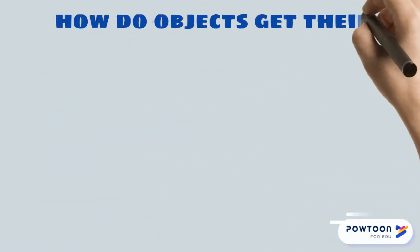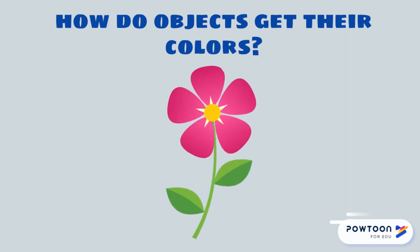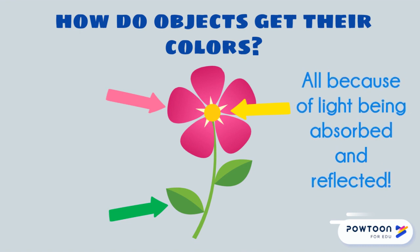Reflection and absorption of light can be used to explain why different objects appear to have different colors. For example, this flower has pinkish petals, a yellow center, and green leaves in a stem. Why is that? Well, it's because all of the colors of light are hitting those three parts of the flower, but each part is absorbing and reflecting different frequencies of light.